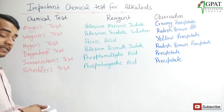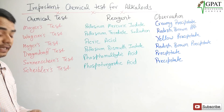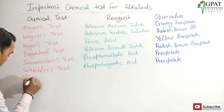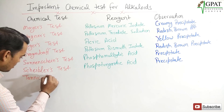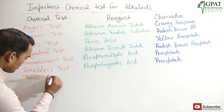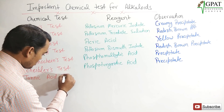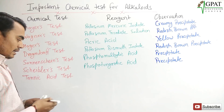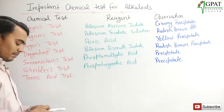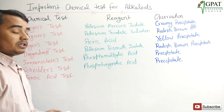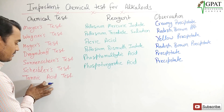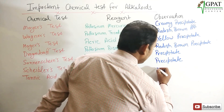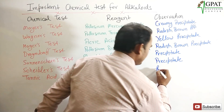The next test is the tannic acid test. In the tannic acid test, the reagent used is tannic acid, and in the observation we find a precipitate of the alkaloid.